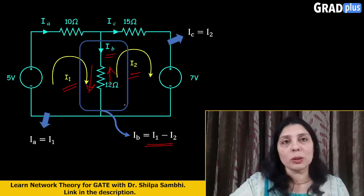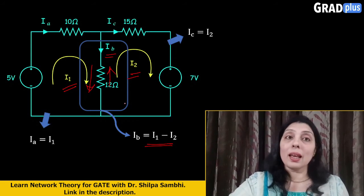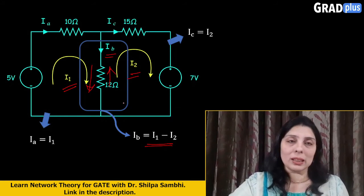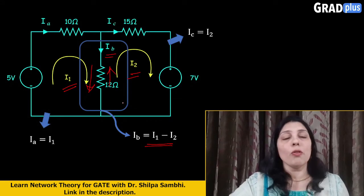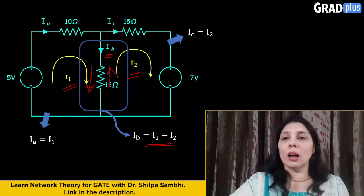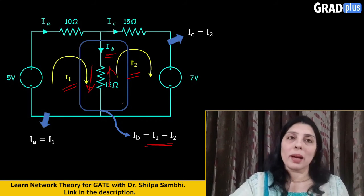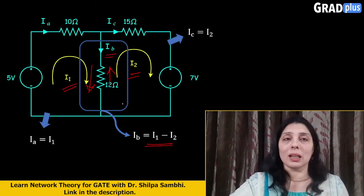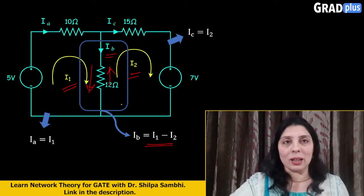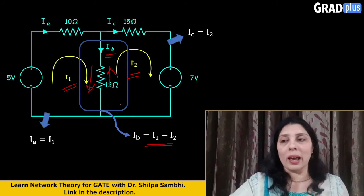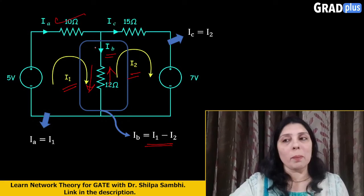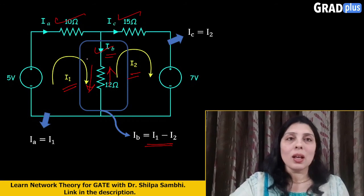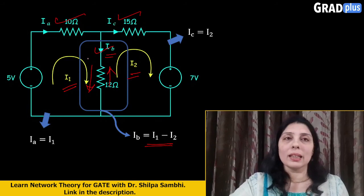So these are the relationships between the loop current and the branch current. But do remember that loop currents are only the hypothetical currents which are assumed for our analysis to make up the equations for the mesh analysis or the Kirchhoff's voltage law. But the actual current which is flowing through the circuit elements is the branch current which is represented here by Ia, Ib, and Ic. So I hope that by this point you have understood the difference between the loop current and the branch current.